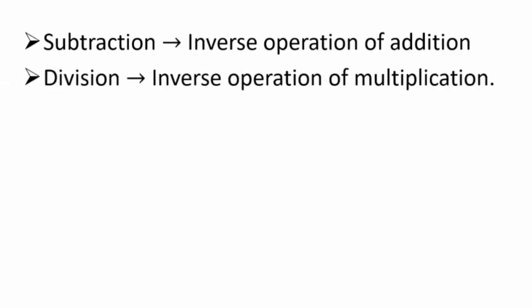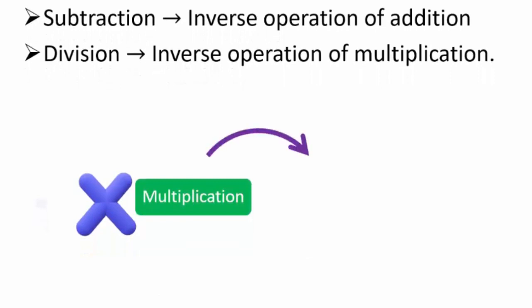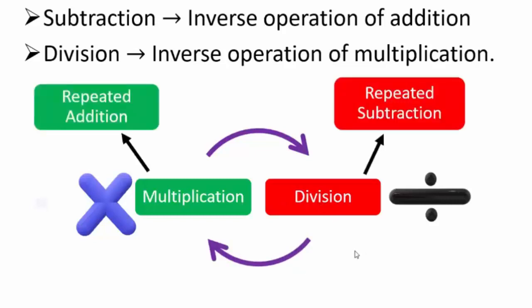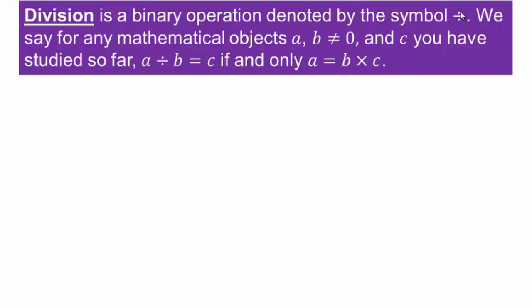Technically, when you are studying fractions, you're actually looking at division. Division and all other operations are connected. Subtraction is the inverse operation of addition; division can be thought of as the inverse operation of multiplication. Multiplication is repeated addition, so division can be thought of as repeated subtraction. Division is a binary operation — the symbol is a bar with two dots — and multiplication and division undo each other.